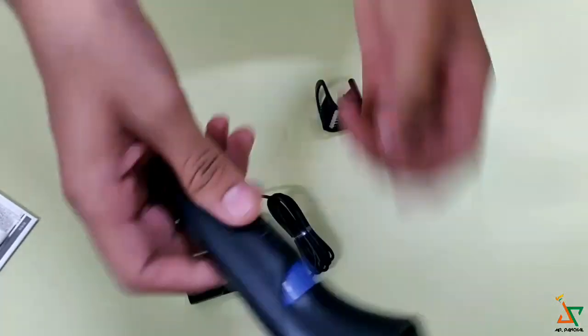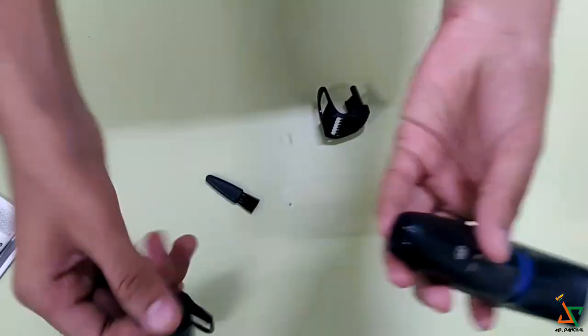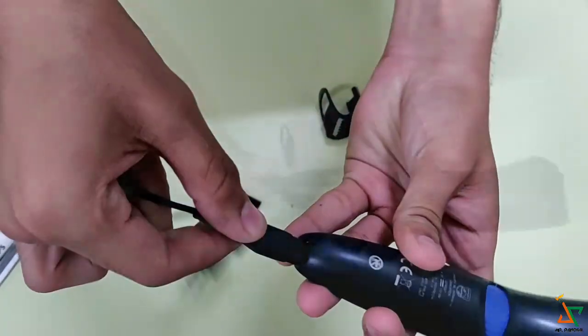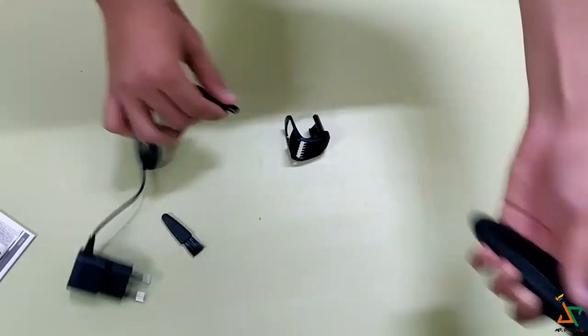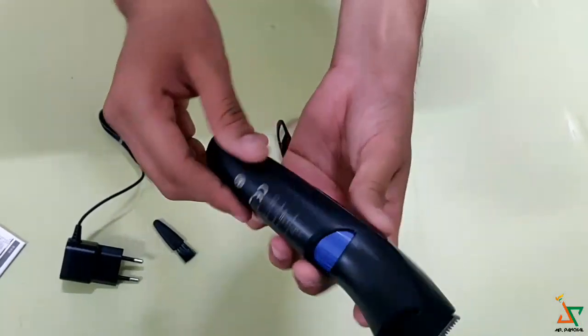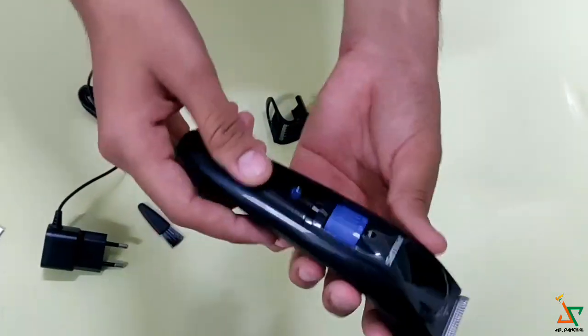There is one nickel magnesium battery, a rechargeable battery. And you can connect the charger here and charge this trimmer. There is no battery compartment. The battery is included in this trimmer.